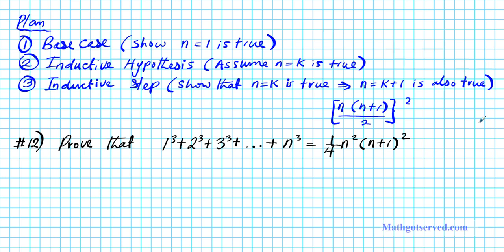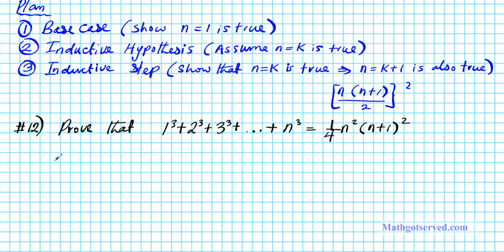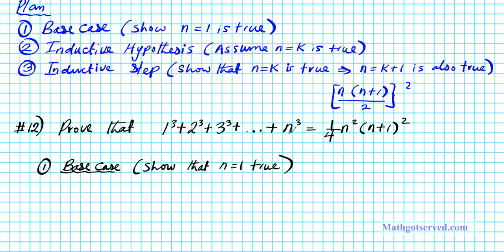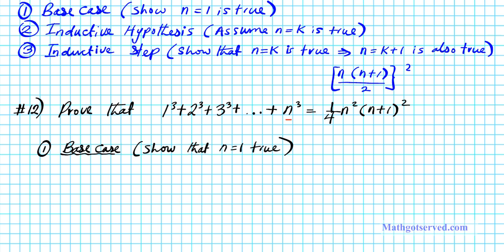Let's go ahead and carry out our proof. Part number one is the base case. For the base case, we have to show that n equals 1 is true. We are going to plug 1 into both sides of our equation. You can alternatively select the first term of your sum on the left side. The question is: is 1³ equal to what you get if you plug n = 1 into the right-hand side, which gives (1/4) · 1² · (1+1)²?